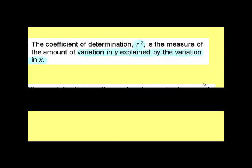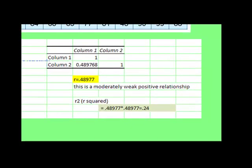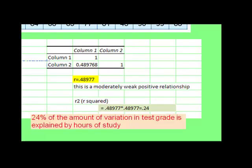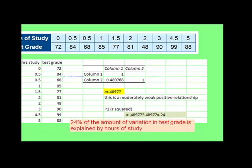Using this wording for this problem, I would say that 24% of the amount of variation in test grade is explained by hours of study.